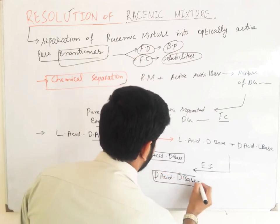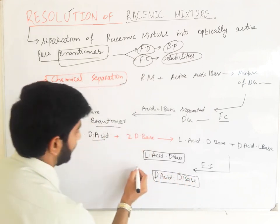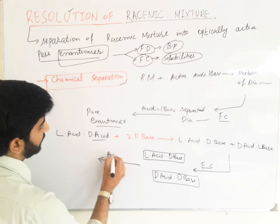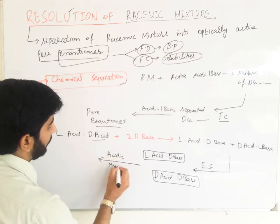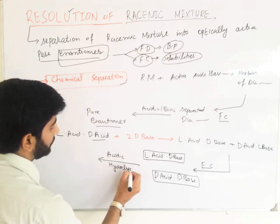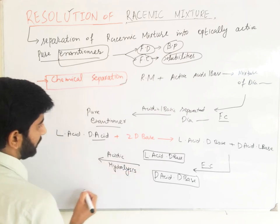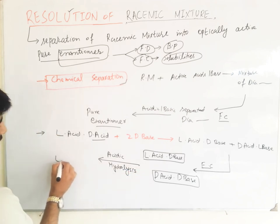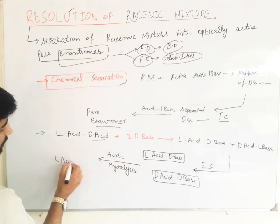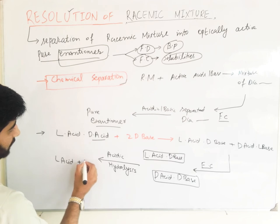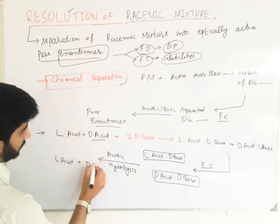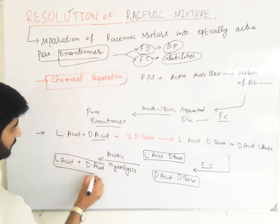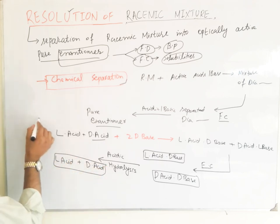The separated diastereomers upon acidic hydrolysis yield pure enantiomers: d-acid and l-acid. This is case number one.